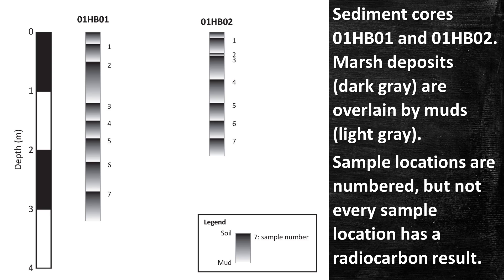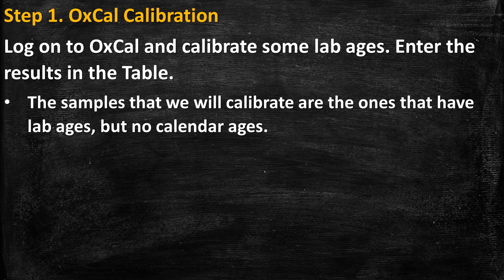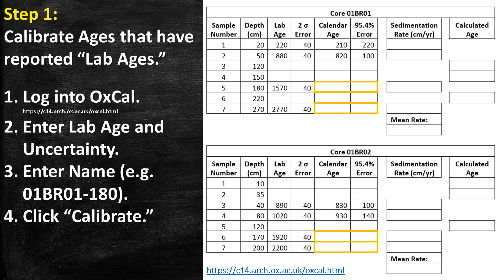Step 1: OxCal Calibration. Sediment cores 01HB01 and 01HB02 contain marsh deposits (dark gray) overlain by muds (light gray). Sample locations are numbered, but not every sample location has a radiocarbon result. Log on to OxCal and calibrate the lab ages that have lab ages but no calendar ages, and enter the results in the table.